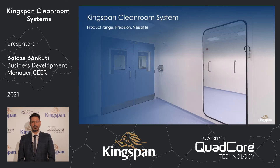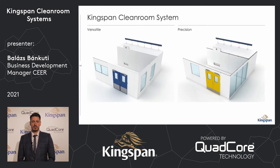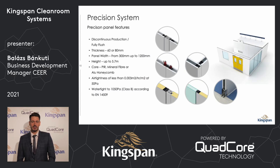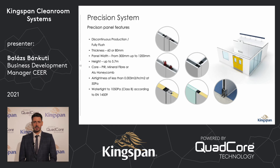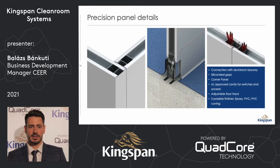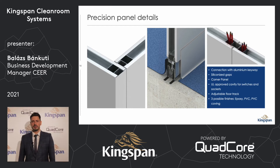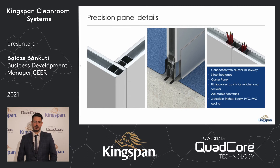In the following slides we will speak about the Kingspan cleanroom systems product range, the precision and the versatile line-up. The precision system is a fully flushed solution for high-end cleanrooms, for ISO cleanrooms and also for GMP cleanrooms. It is available in 60 or 80 mm thickness with different core types like PIR, quad core, mineral fiber, or aluminum honeycomb. On the left side you see our corner panel, which gives a flushed connection in a corner. In the middle you see our adjustable floor track, giving a clean connection with a PVC or epoxy floor. On the right side you see the connection between two panels and the cavity for cables.